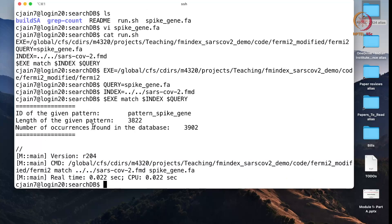So if I run this command, what you see is that it first reads the query sequence that I gave it. It tells me that the length of the query sequence that I gave is 3822 characters. And in an instant, it is able to tell me that the number of occurrences in the database that have exact match with the gene query is 3902.